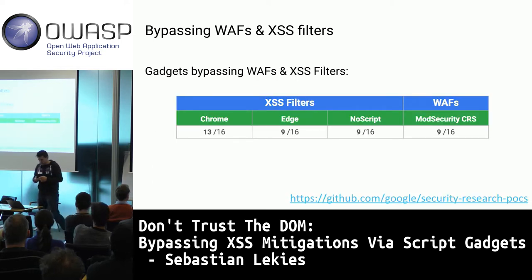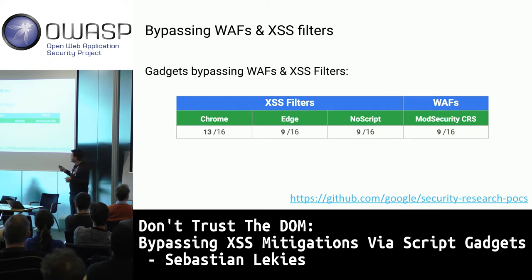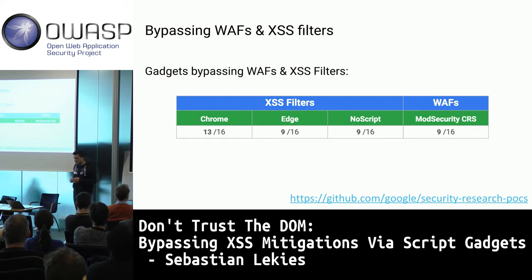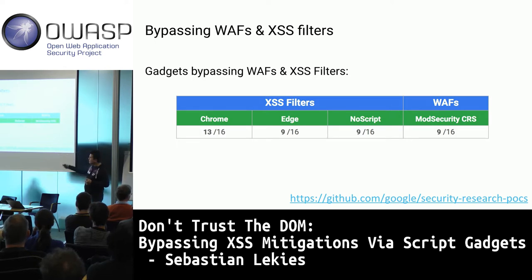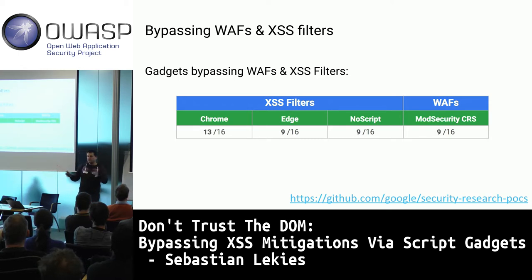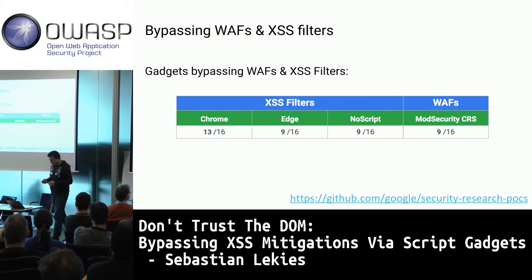Here's a summary of findings for XSS filters and WAFs. We looked at three filters — Chrome, Edge, and NoScript — and mod_security for WAFs. In most cases we could bypass 9 out of 16 libraries. Chrome was slightly higher because it tries to prevent false positives, whereas other filters try to catch as much as possible.